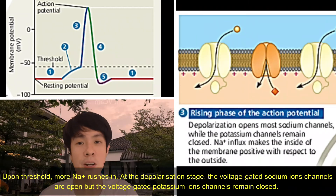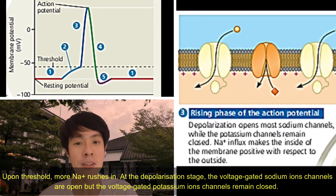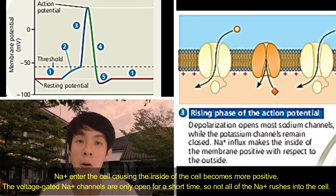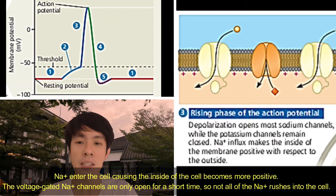Upon threshold, more sodium ions rush in. At the depolarisation stage, the voltage-gated sodium ion channels are open, but the voltage-gated potassium ion channels remain closed. Sodium ions enter the cell, causing the inside of the cell to become more positive. The voltage-gated sodium ion channels are only open for a short time, so not all of the sodium ions rush into the cell.